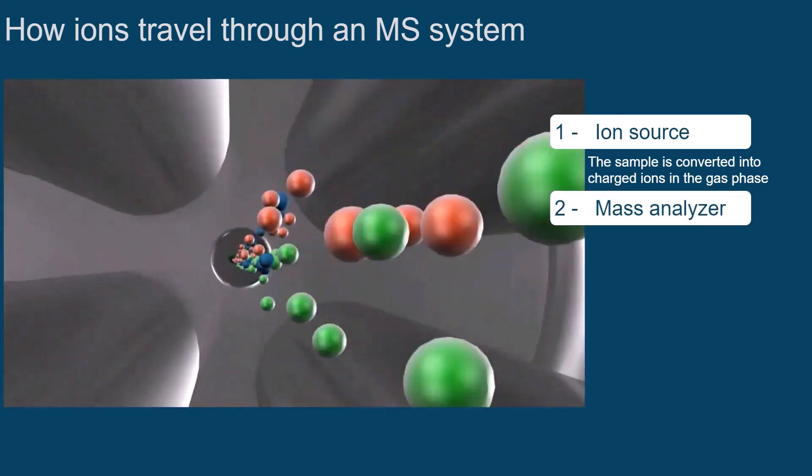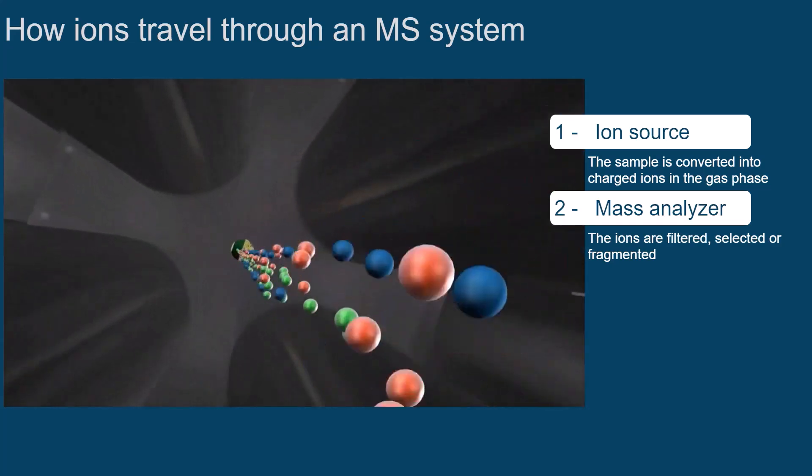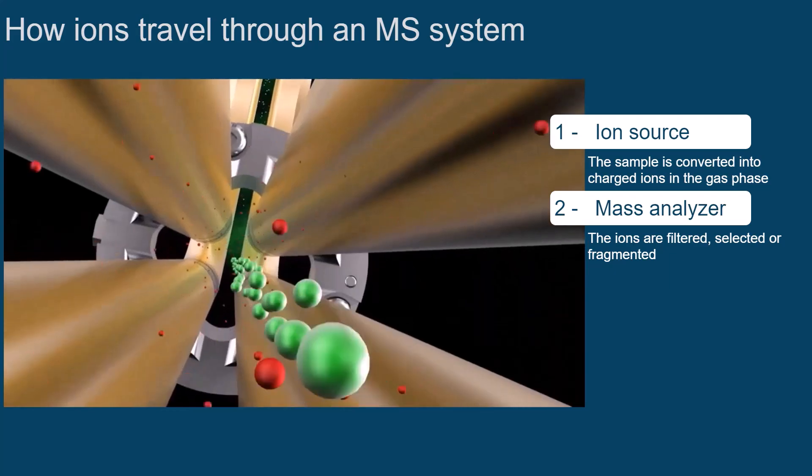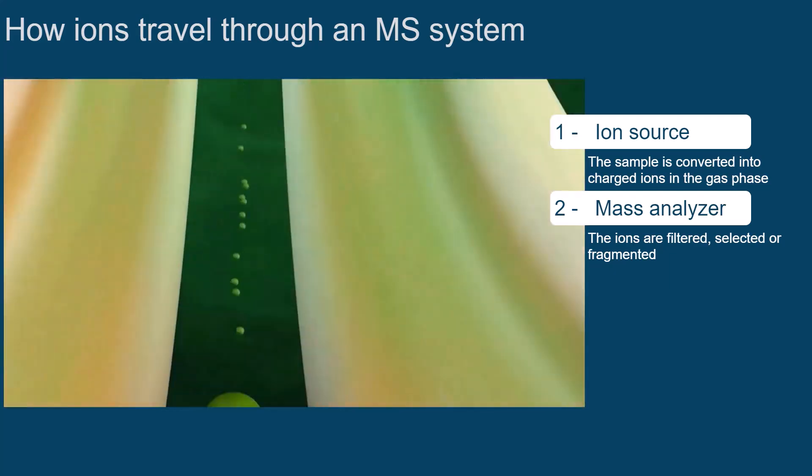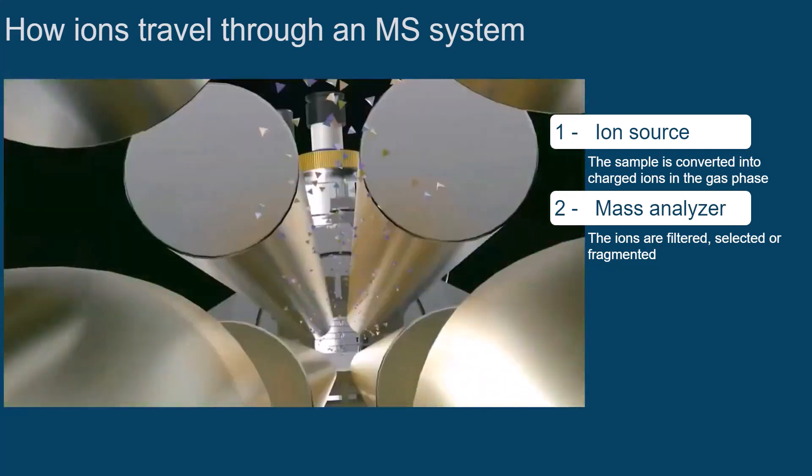In the mass analyzer, the ions with different M over Z are filtered, selected, or fragmented. As we will discuss in other episodes, there are different types of analyzers that use electric or magnetic fields to separate and focus the ions.